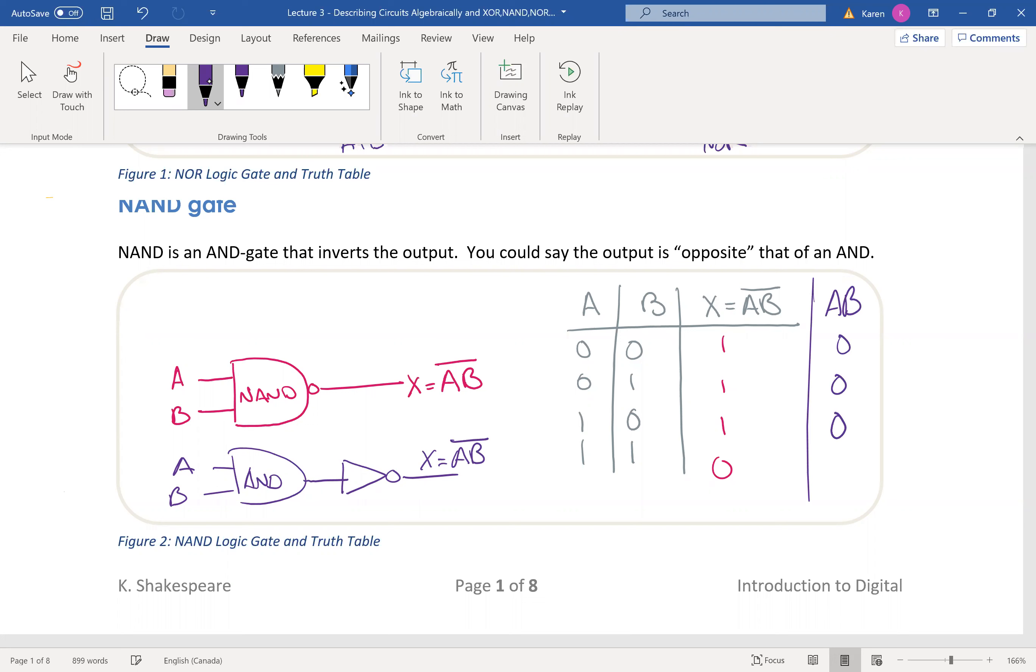everything is a 0 unless all inputs are a 1. So you can see that this is AND and this is NAND. It's really an inverted version of AND, which is literally what it is. But we denote it with this little circle instead of writing the entire inverter.